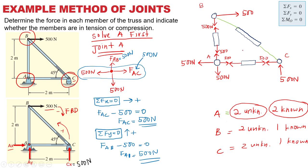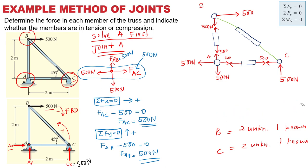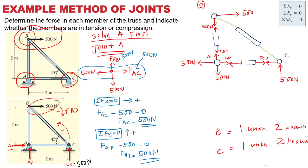Joint A is settled. Now look at joint B and joint C — their status has changed. Joint B now has one unknown and two knowns. Joint C also has one unknown and two knowns. So the status is the same — you can solve either one. Take whichever you want. Let's say I want to take joint C — let's settle joint C.